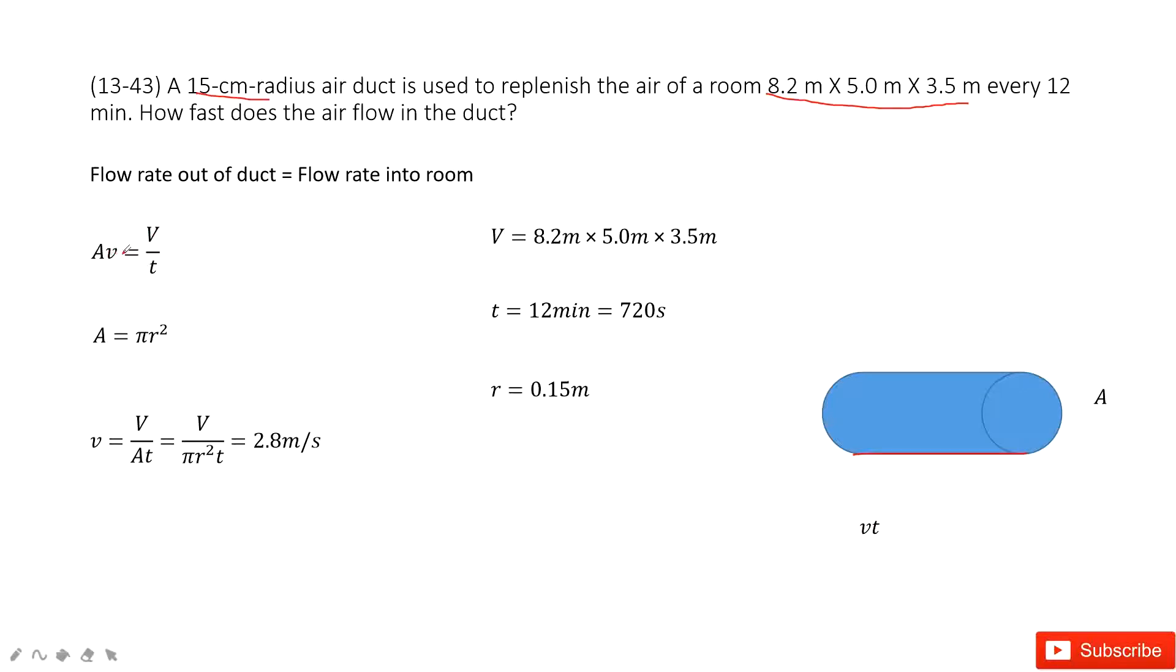So we can get A times V equals capital V divided by T as we learned in our textbook. And the volume for the air is given, the three dimensions. And the time T is 12 minutes. We convert it to seconds.